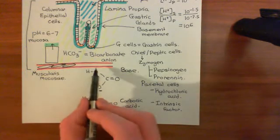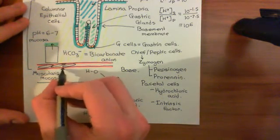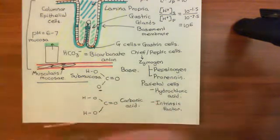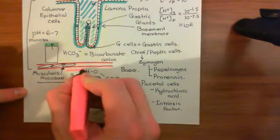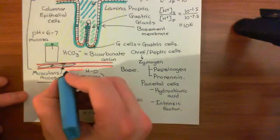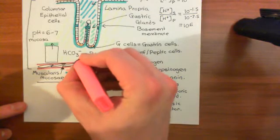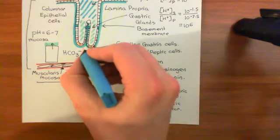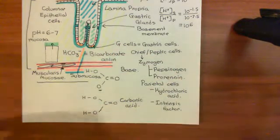Underneath the muscularis mucosae is another layer of connective tissue called the submucosa — it's underneath the mucosa. The submucosa contains arterioles and venules. The arterioles send off smaller branches which pass through the muscularis mucosae to supply the cells of the gastric epithelium with blood, and smaller venules take the blood from the gastric epithelium back to the venules within the submucosa.